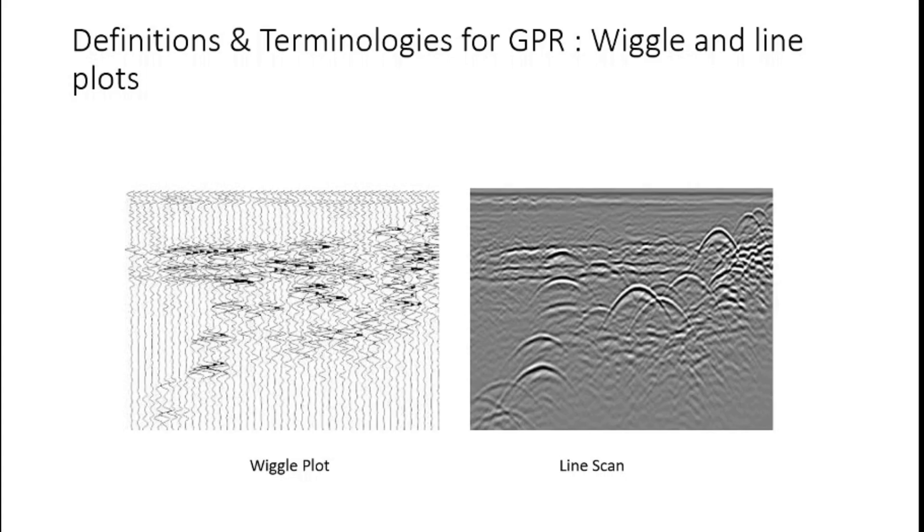On the left hand side and right hand side, these two images represent the same geology and same subsurface, but the presentation is very different. Back in the days, the wiggle plot was in the early stages of GPR where the traces are collected accordingly. And then this new technology in which the wiggle plots are then converted to the line scan, the pictorial representation where the gray scale is used.